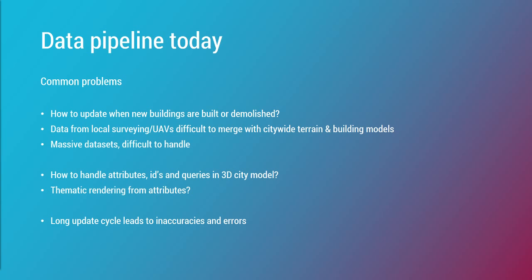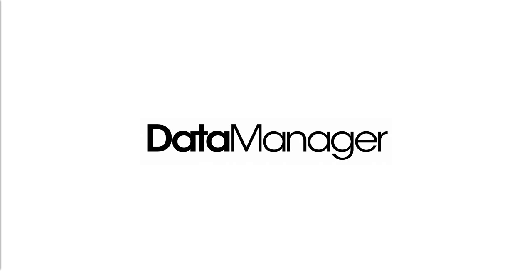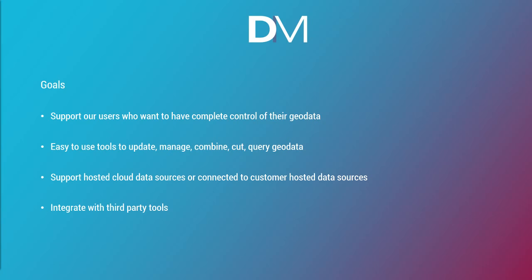A long update cycle of data can lead to inaccuracies both in the visualization and in planning — if planners are working on inaccurate or old data that might lead to errors. If you're using your 3D data model publicly, the general public will notice if it's 2 years old and a building they're neighbor to isn't in the model, and they'll complain. So it's important to have accurate and current data — and that's why we started to think about this concept and build the Data Manager concept that we're currently developing.